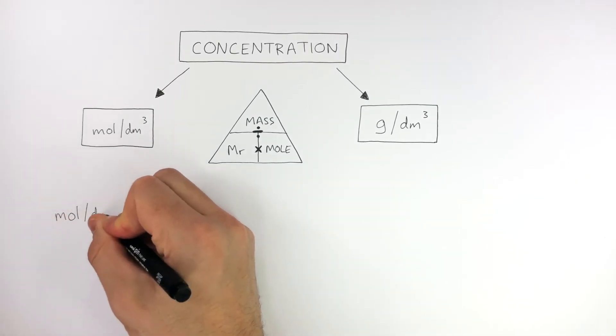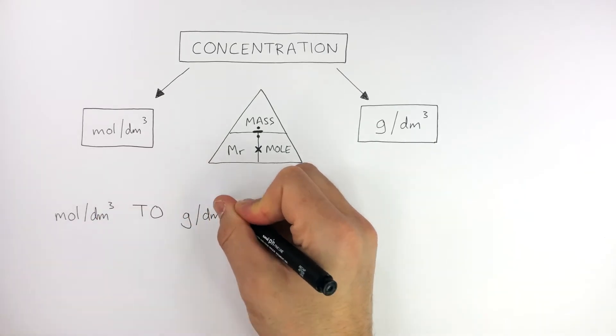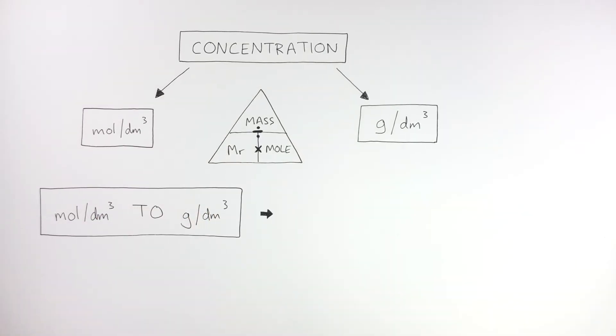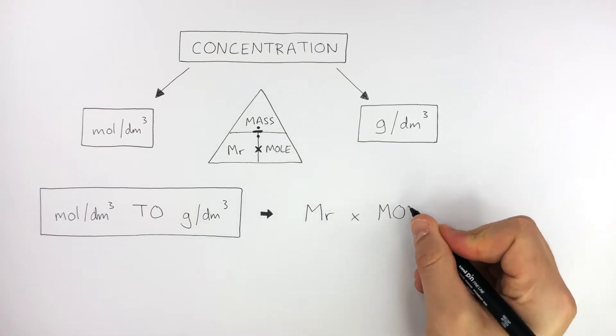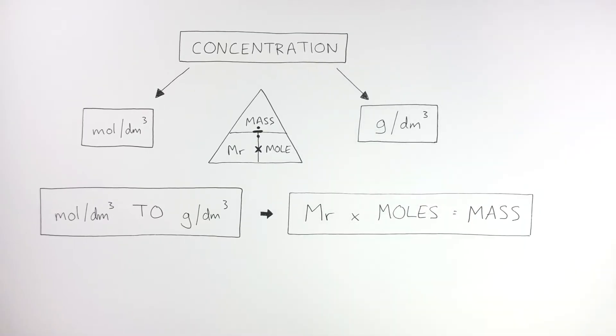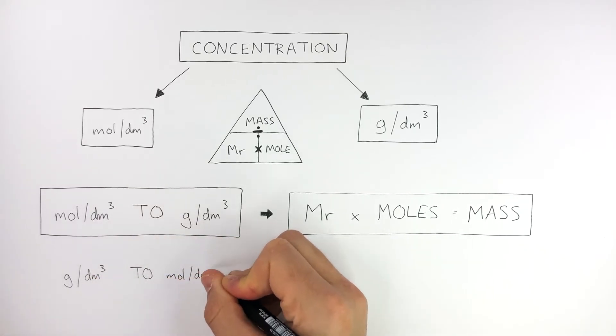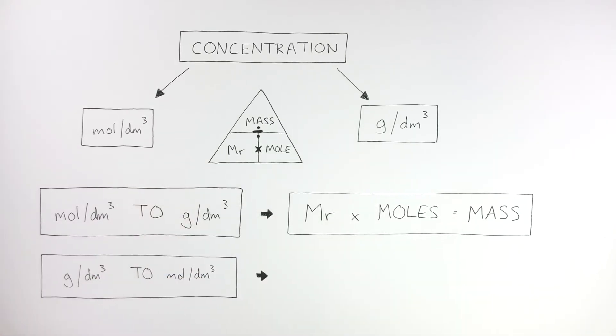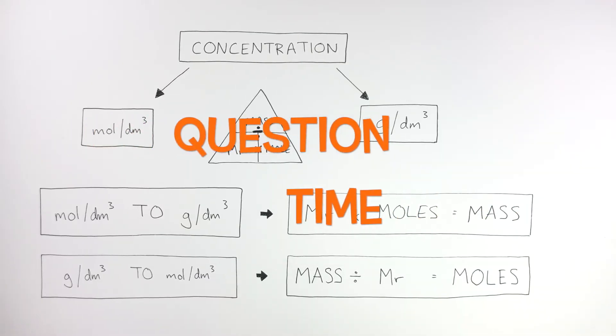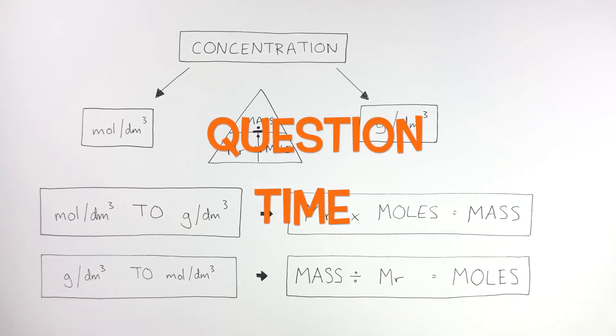To go from mole per decimeter cubed to grams per decimeter cubed, we use the equation MR times moles equals mass. And then to go from grams per decimeter cubed to mole per decimeter cubed, we use the equation mass divided by MR equals moles. It's question time. Attempt these questions to check your understanding.